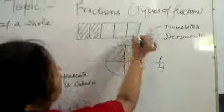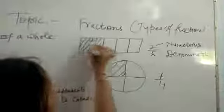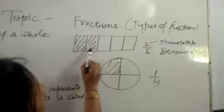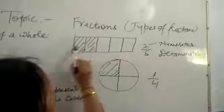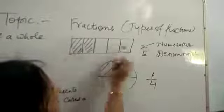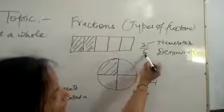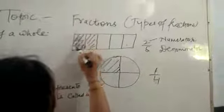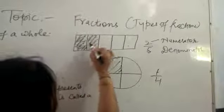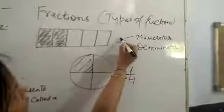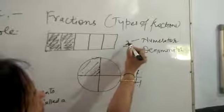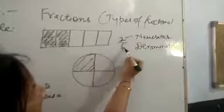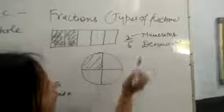Suppose this is the complete figure — the whole. This complete figure is divided into 5 equal parts. Total parts are 5, so I have taken 5 as the denominator. And how many are shaded? Only 2 parts are shaded, and I have taken the shaded part as the numerator. So 2 is called the numerator and 5 is called the denominator here.